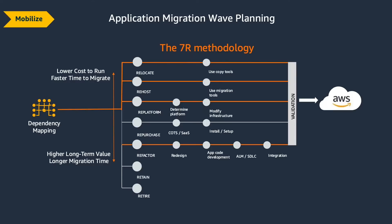With the 7R methodology, the first R is Relocate — simply moving something already inside your data center; this may not apply much to legacy applications. Rehosting is a true lift-and-shift, applicable where you have static, older Windows workloads you can't refactor. Replatforming involves determining a new future platform — for example, moving a legacy .NET application onto containers on AWS. We also try to modify the infrastructure and refactor those applications moving forward.